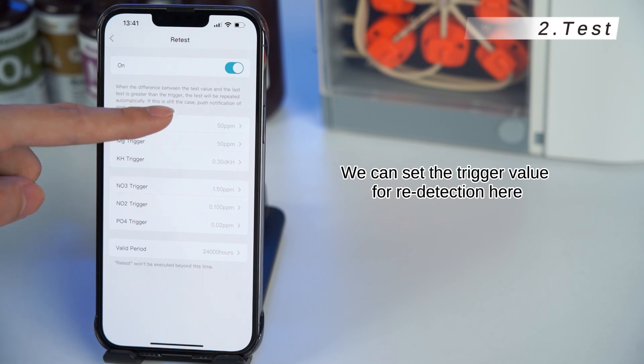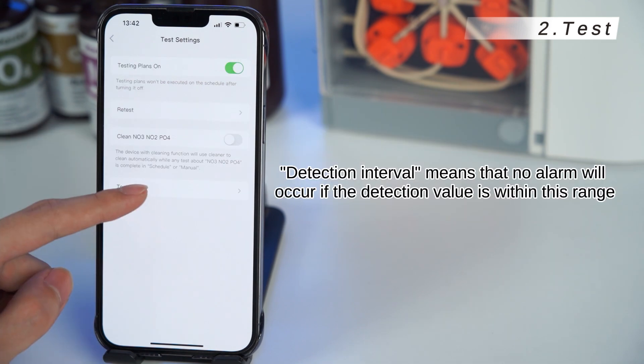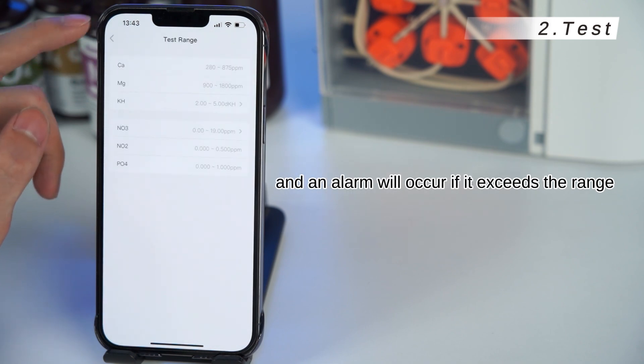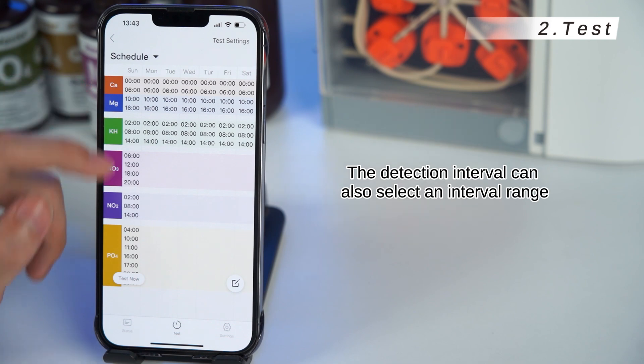We can set the trigger value for redetection here. If you don't need this feature, click close. Detection interval means that no alarm will occur if the detection value is within this range, and an alarm will occur if it exceeds the range. The detection interval can also select an interval range.